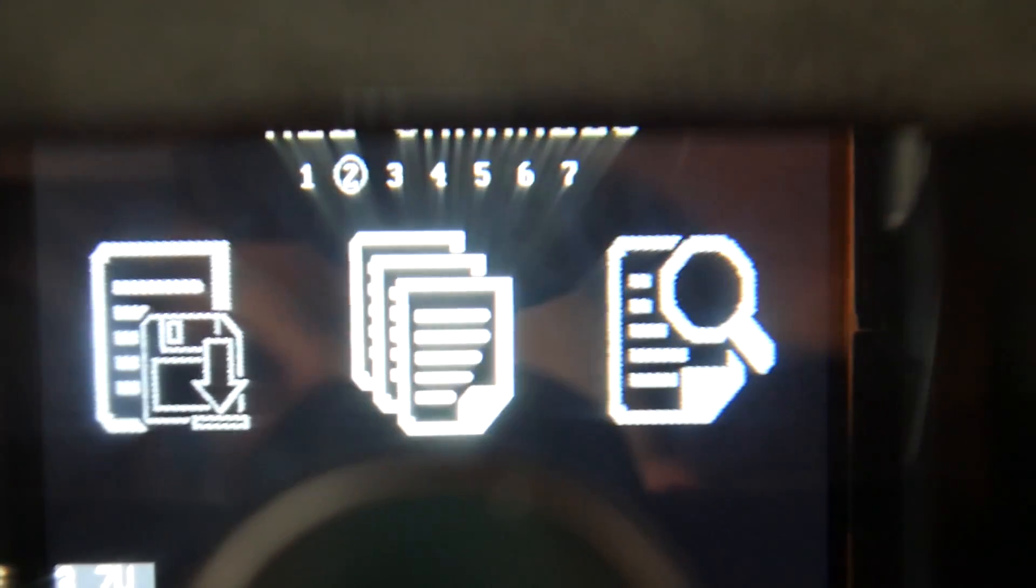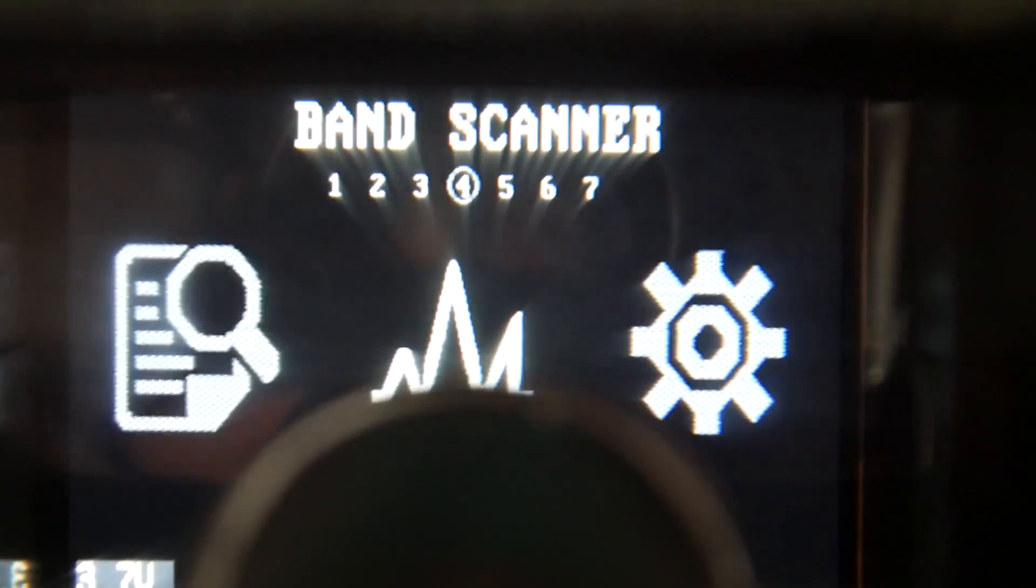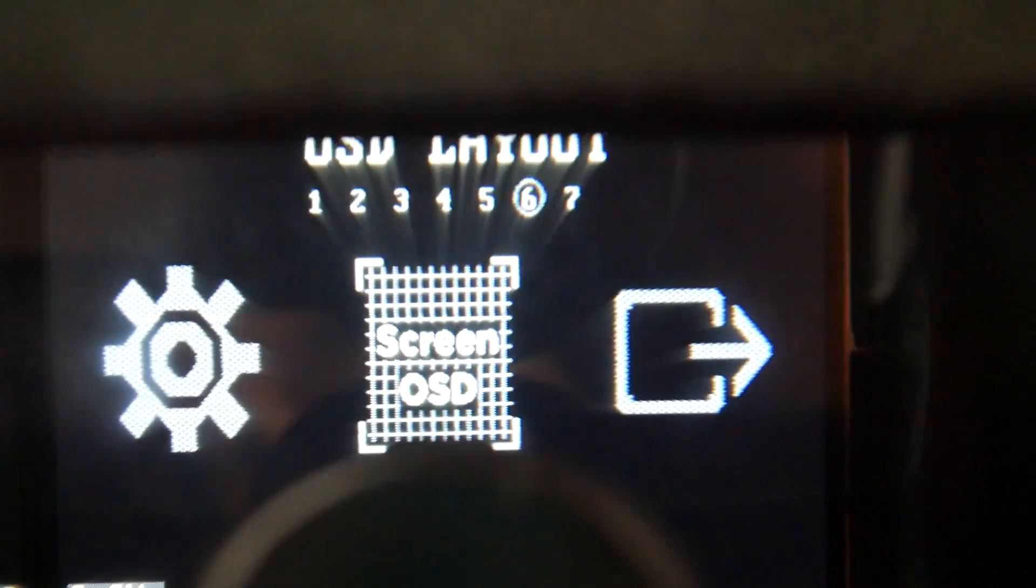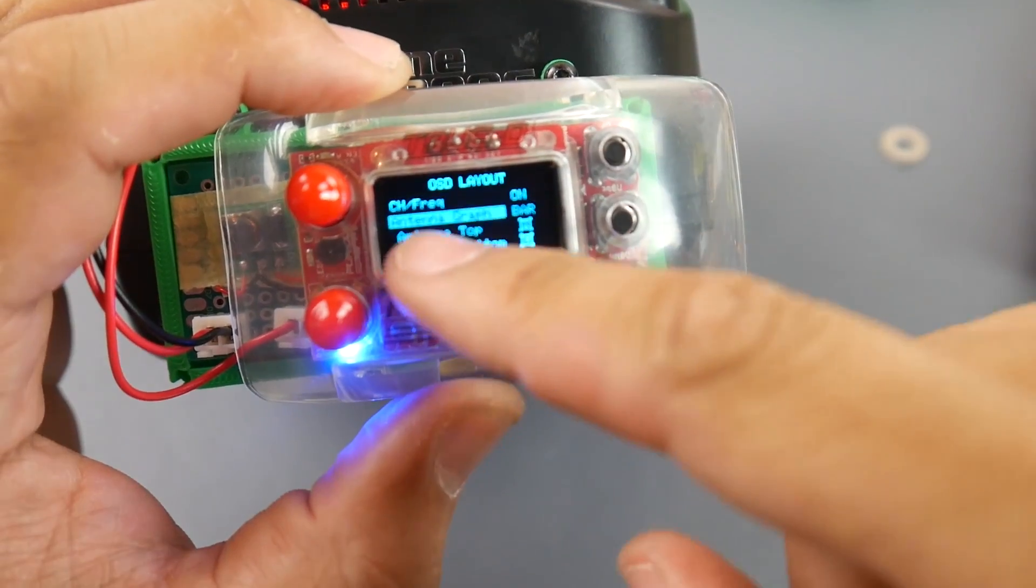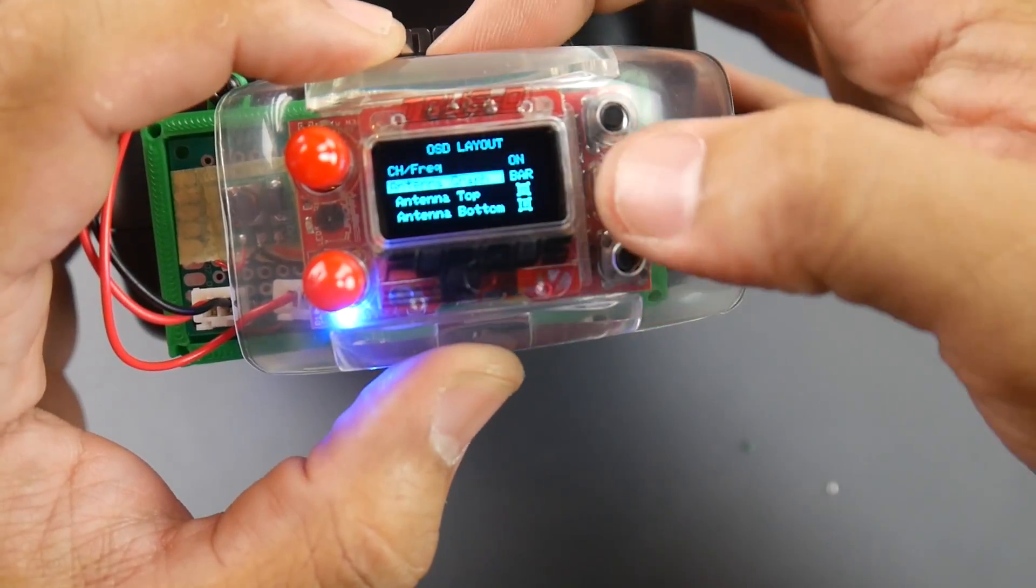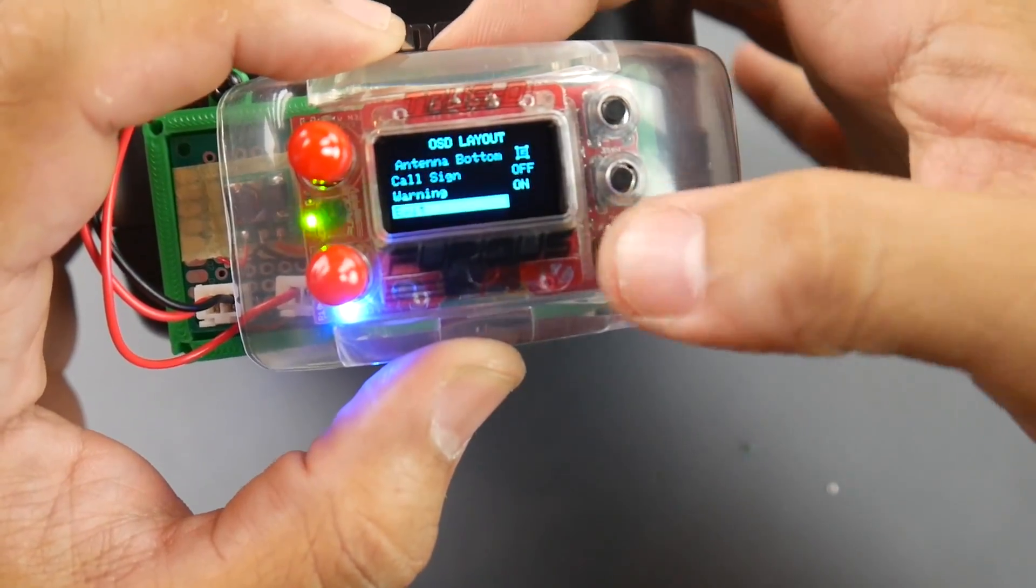Now, if you don't believe me, see antenna bar graph. Now, if you flip it over, you'll see antenna bar graph OSD layout. And if I go back, I forgot how to go back. There we go.